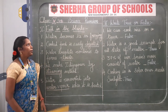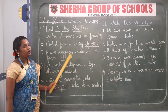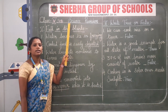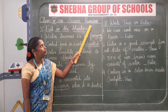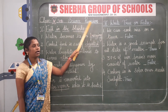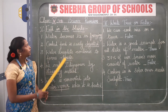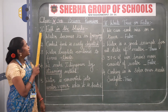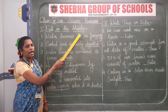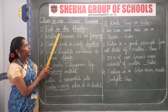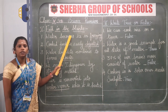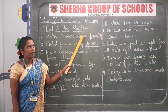Everyone open your revision note and draw two lines margin and write the heading 'Science Revision'. Write the first Roman numeral letter: Fill in the Blanks, and underline the heading using scale and pencil.